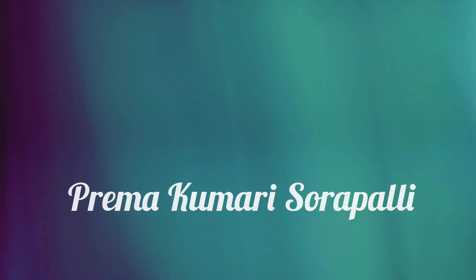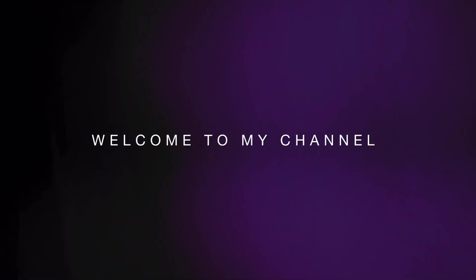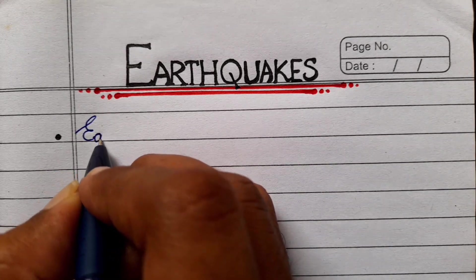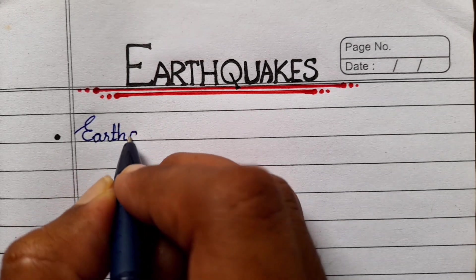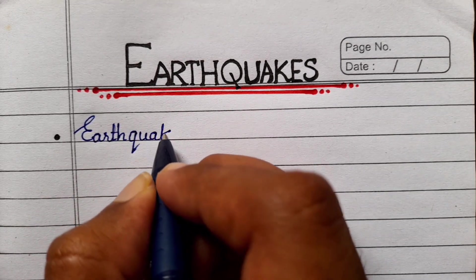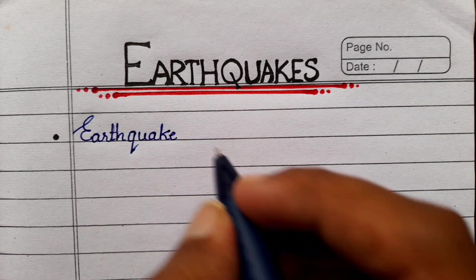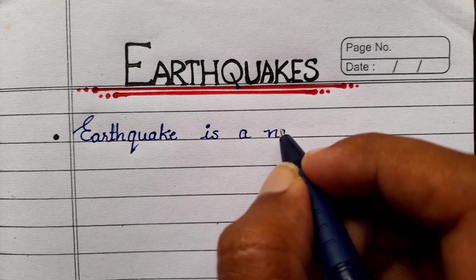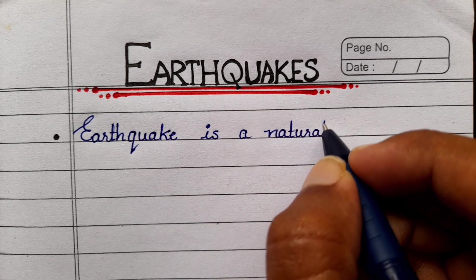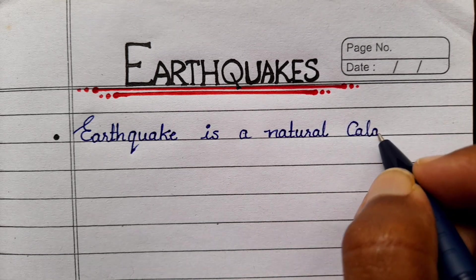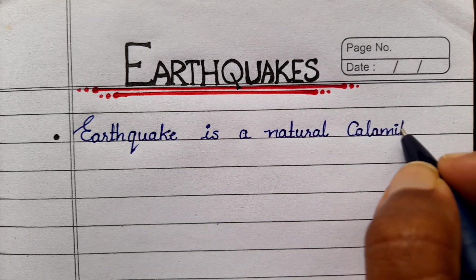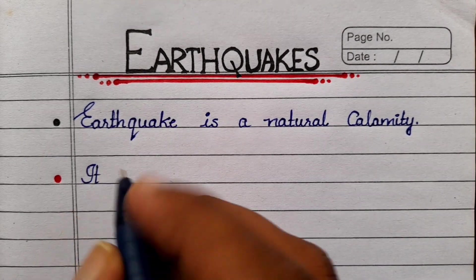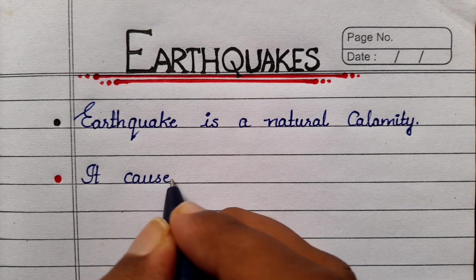Hello everyone, welcome back to my channel. Today in this video I'm going to write briefly simple points on earthquakes. I hope you all might like this video — it is particularly useful for children to easily understand. I've categorized them into small points so it will be very easy to understand. First point: earthquake is a natural calamity, also it can be called a natural disaster.